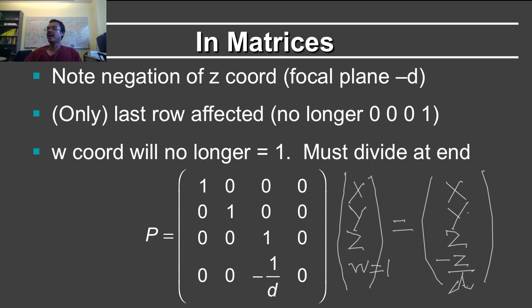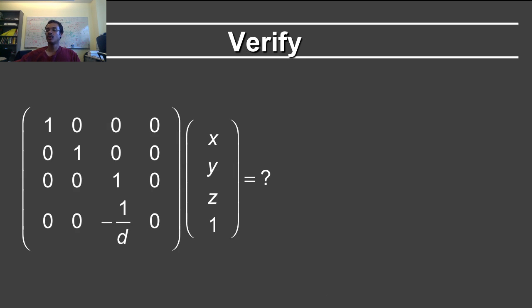Now, of course, the question is why is the minus sign, again OpenGL convention, you are looking down the minus z axis, and so the focal plane is at minus d. So again, I went through that verification already.